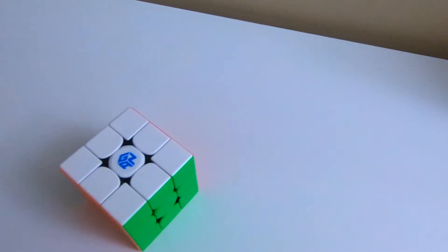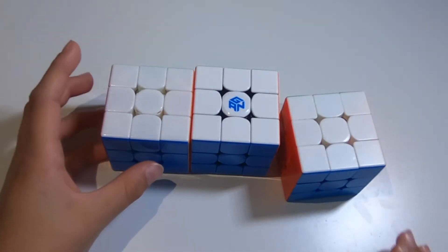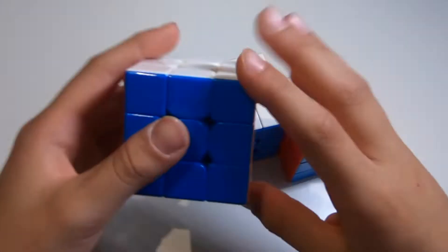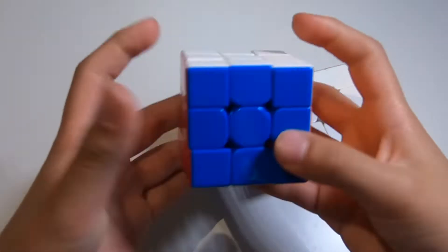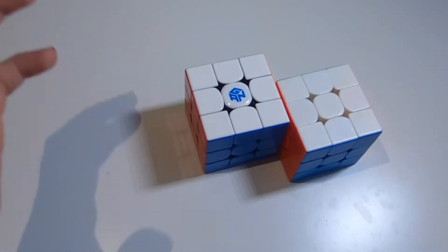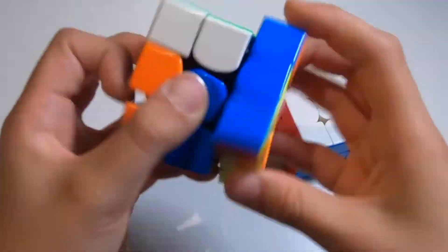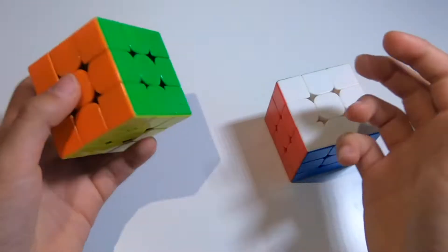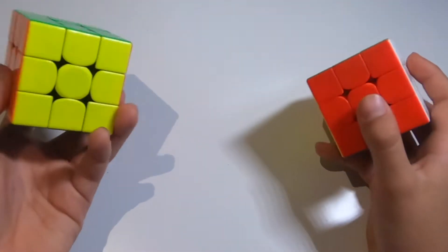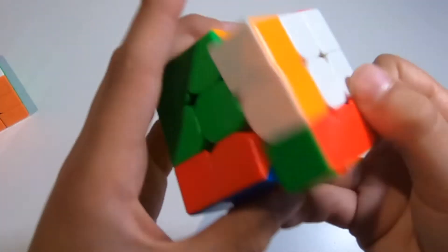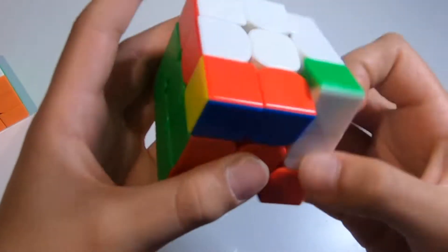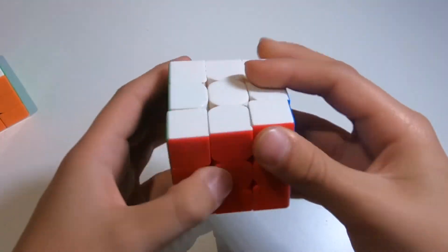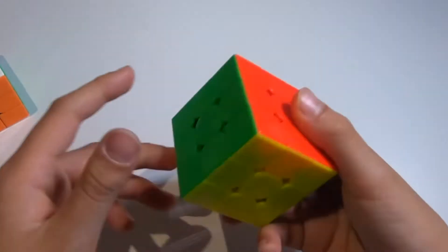So guys, next up for 3x3, I'm still not deciding what I'm gonna be using. I'm between the WR, the GAN-356X, and the Yushin Little Magic M. Now honestly, I'm probably not gonna use the WR since it just doesn't fit my turning style and it's better for OH for me. The GAN-X is really good and I really do like the feeling, but I feel like the speed for it is just not right for competition and the cube is a little bit too unstable for me in competition. And the Yushin Little Magic M, I think it's just a good alternative. I might actually be using this just because I want a more stable, snappier cube in competition so I don't lock up.